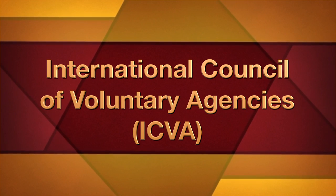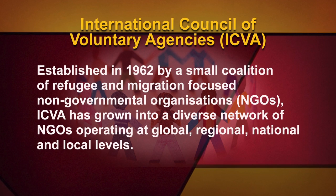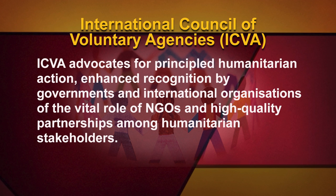The International Council of Voluntary Agencies (ICVA) is a global network of non-governmental organizations whose mission is to make humanitarian action more principled and effective by working collectively and independently to influence policy and practice. Established in 1962 by a small coalition of refugee and migration-focused non-governmental organizations, ICVA has grown into a diverse network of NGOs operating at global, regional, national and local levels. ICVA advocates for principled humanitarian action and enhanced recognition by governments and international organizations of the vital role of NGOs in high-quality partnerships among humanitarian stakeholders.